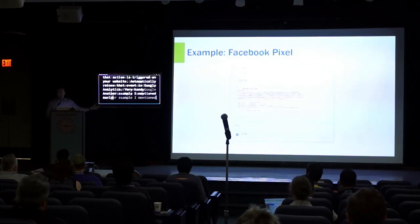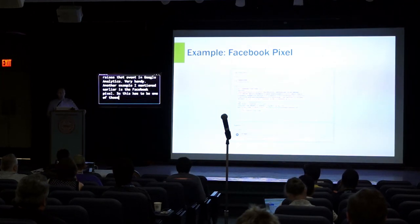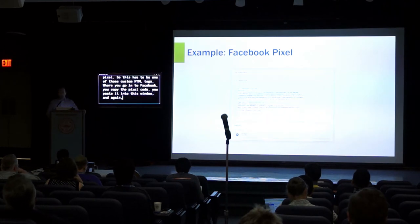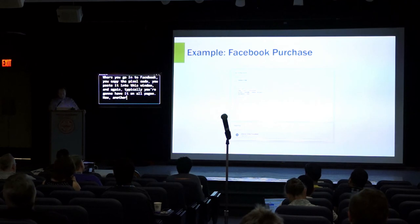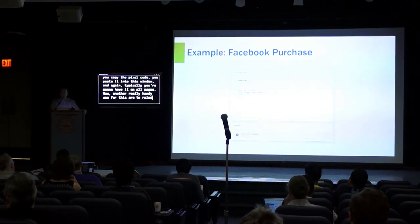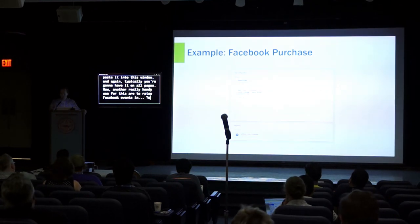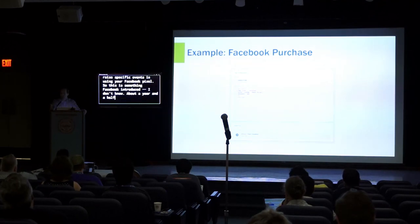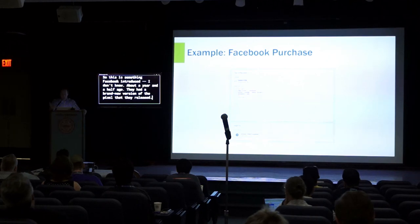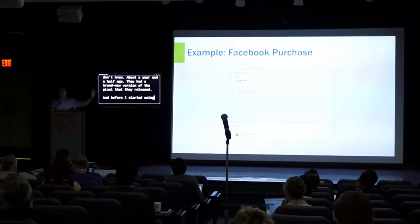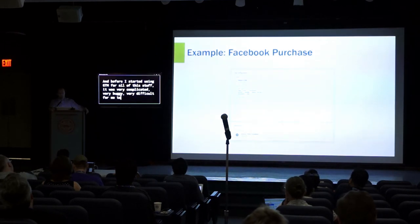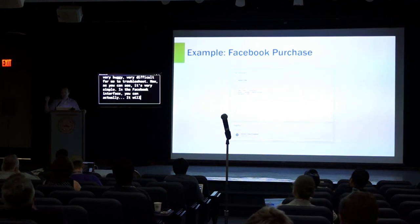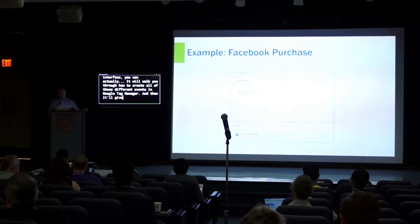Another example is the Facebook Pixel — this has to be one of those custom HTML tags where you go into Facebook, copy the pixel code, paste it into this window, and typically you're going to have it on all pages. Another really handy use is to raise specific events using your Facebook Pixel. Facebook introduced a brand new version of the Pixel about a year and a half ago, and before I started using GTM for all of this, it was very complicated, very buggy, and very difficult to troubleshoot. Now, as you can see, it's very simple — the Facebook interface will actually walk you through how to create all of these different events in Google Tag Manager and give you the code to copy and paste in.